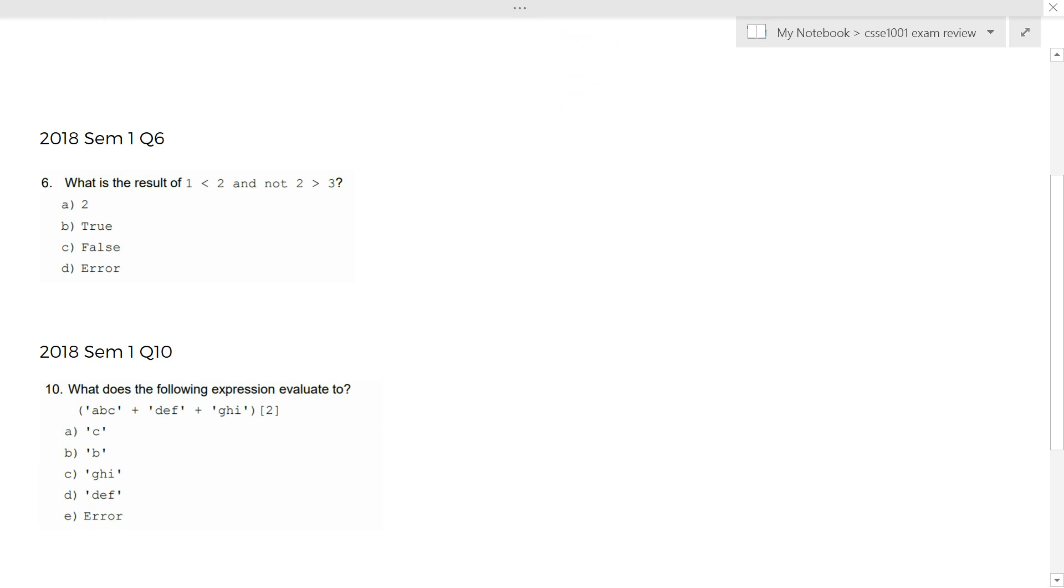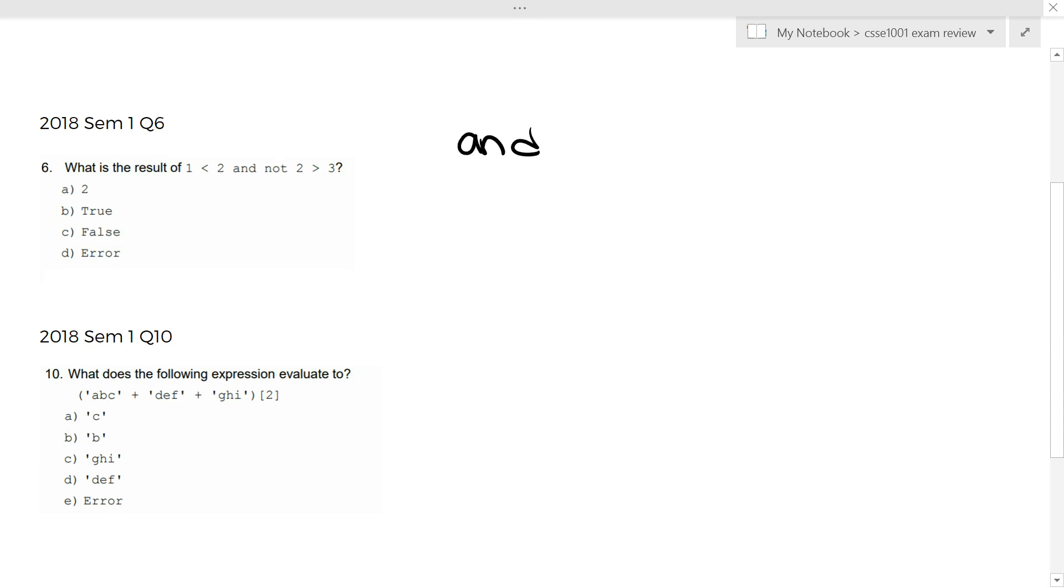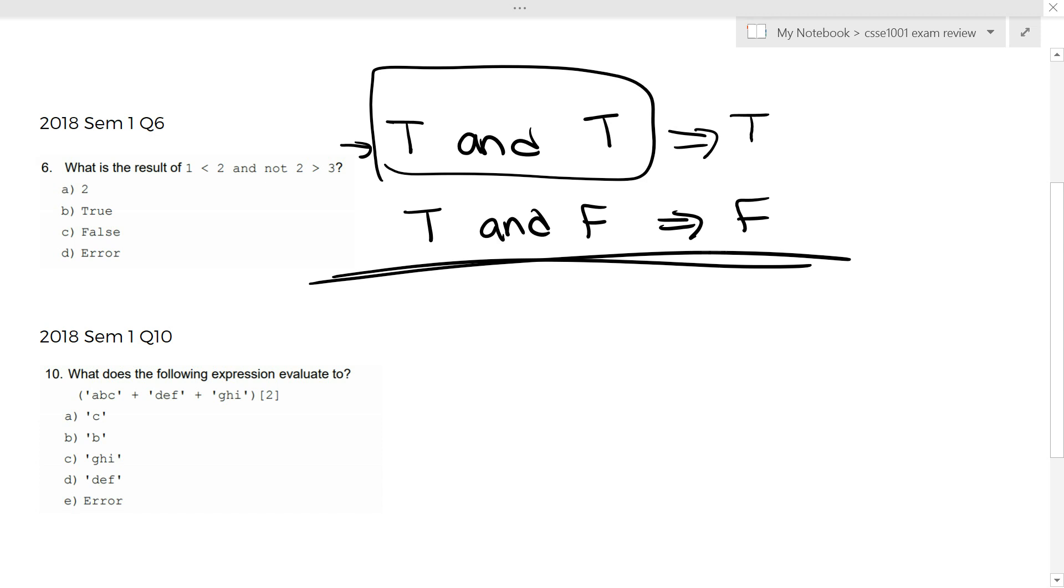Okay, let's do question 6 now from the same exam. What does the result 1 is less than 2 and not 2 is greater than 3? Have a try yourself. Break down the statement, see what each part is saying and then pause the video. Okay, hopefully you paused the video and had a go. So some key things to note is whenever you see and, that means for this statement to be true this needs to be true, I'm putting a T for true because I'm lazy, and this needs to be true. This is the only way this statement can be true.